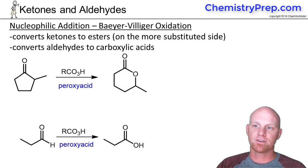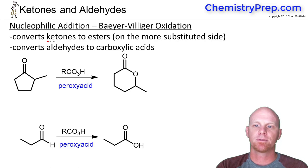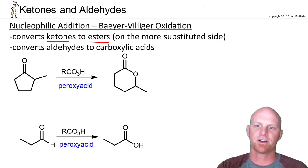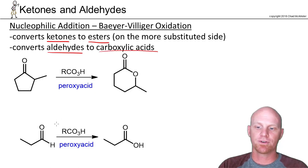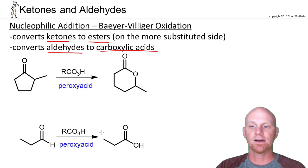Now let's take a look at the Baeyer-Villiger reaction, and it does a couple of different things. Most commonly, you'll see it converting ketones into esters, as in the first reaction here, but it'll technically also convert aldehydes into carboxylic acids, although you've learned another way to do that, so that's the second one here.